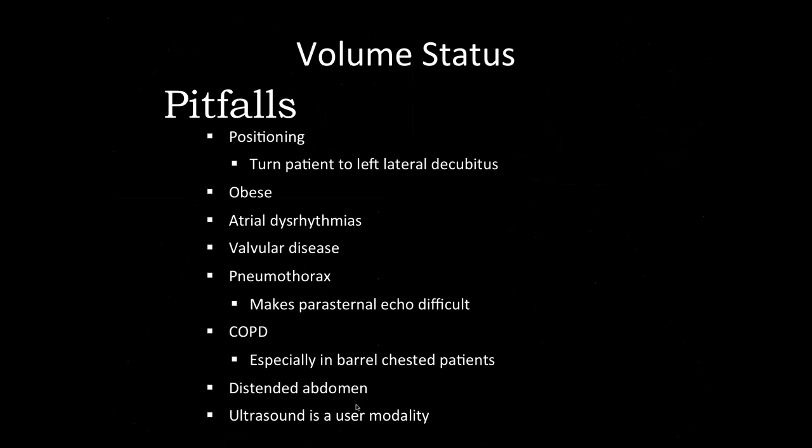Combining these data points allows you to think about different scenarios: a plethoric IVC with low collapsibility but very high stroke volume variation might suggest something like a massive PE or severe COPD. Conversely, a collapsed IVC with high stroke volume variation, hyperdynamic cardiac output, and high EF might suggest septic shock, where everything is dilated and down.